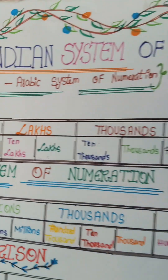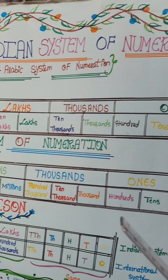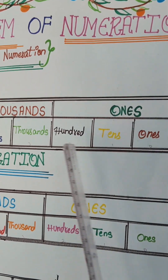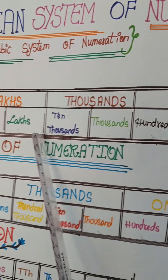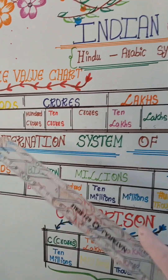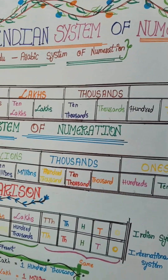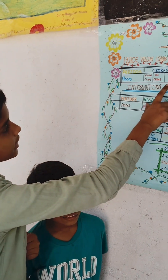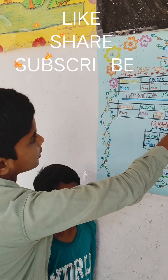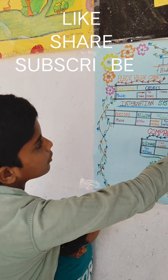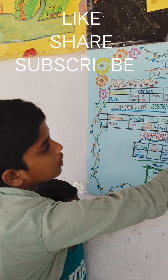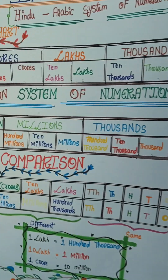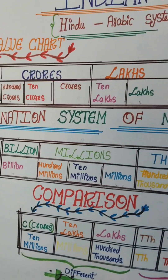Did you understand? So the first comma in the Indian system comes after three digits — that is after the hundreds place — and then after every two digits. Suppose you have to read a number according to the Indian system: 987 crores, 65 lakhs, 43,210. This is how you read a number according to the Indian system of numeration.